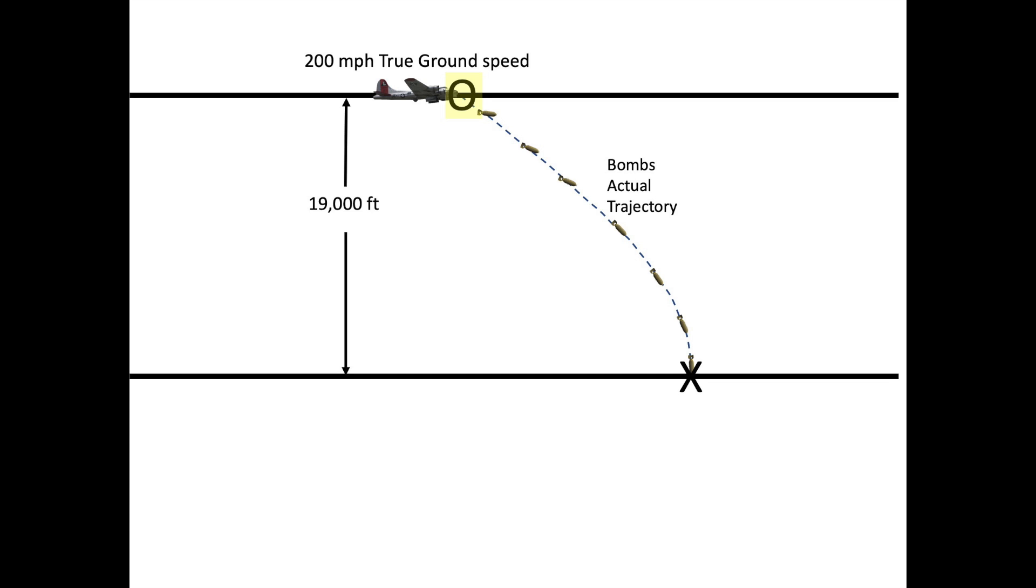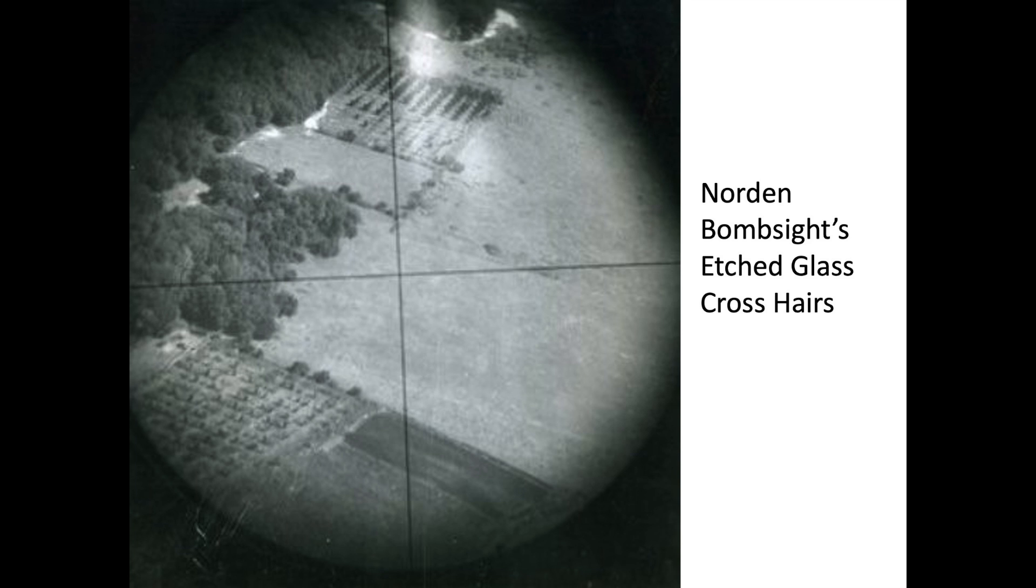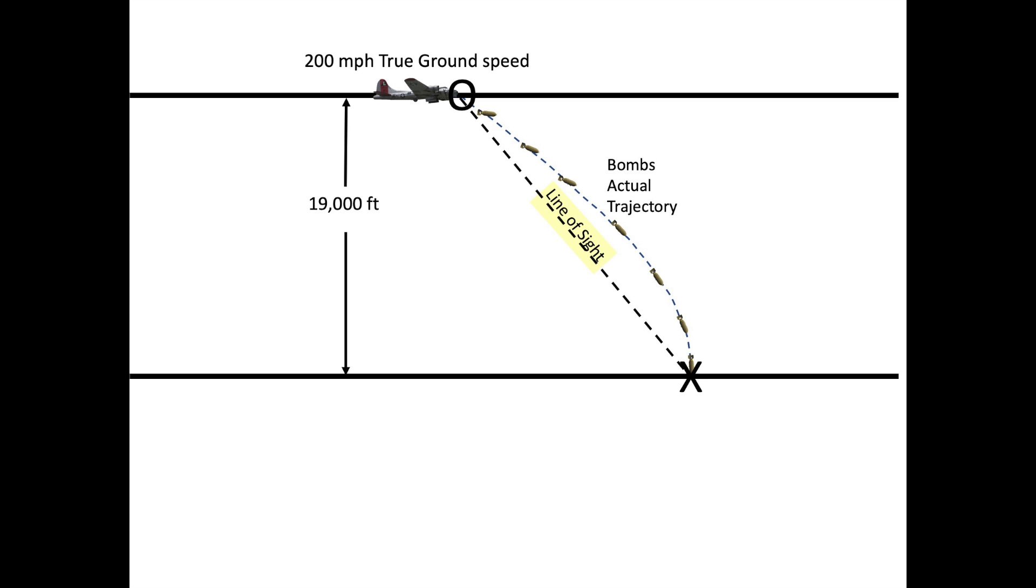We already know the bomb's vertical speed and horizontal speed at impact, but we actually won't be using those parameters. The bombardier will be looking through the Norton bomb site's crosshairs along the line of sight.